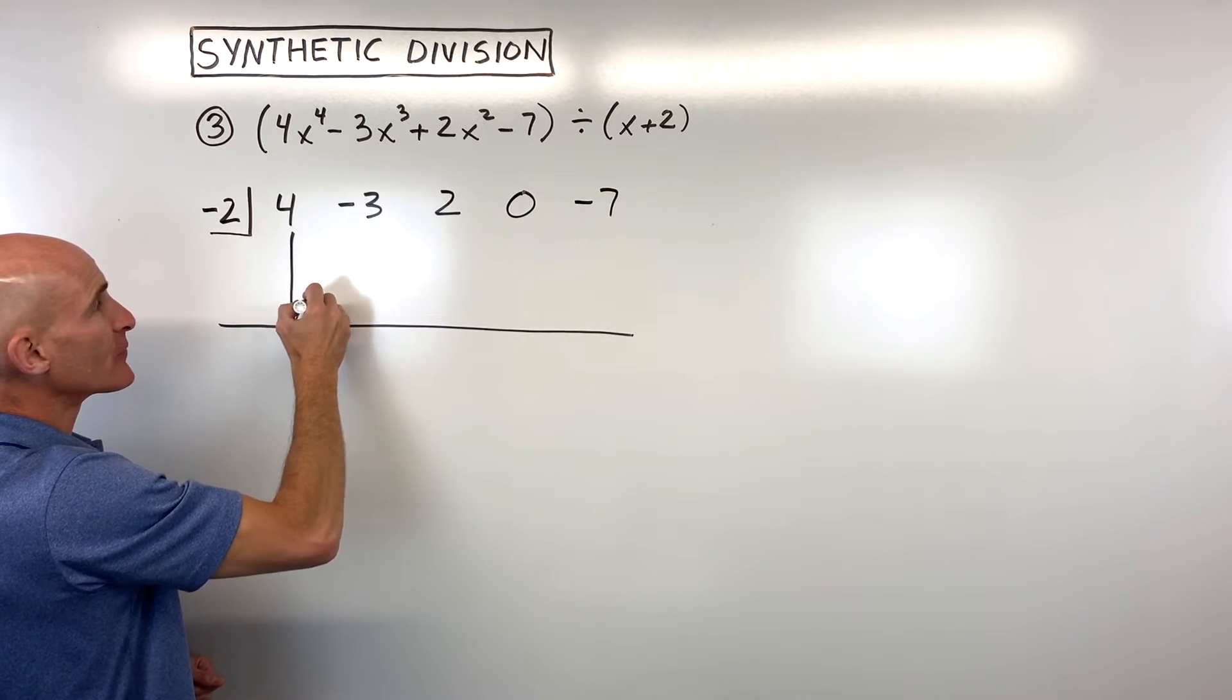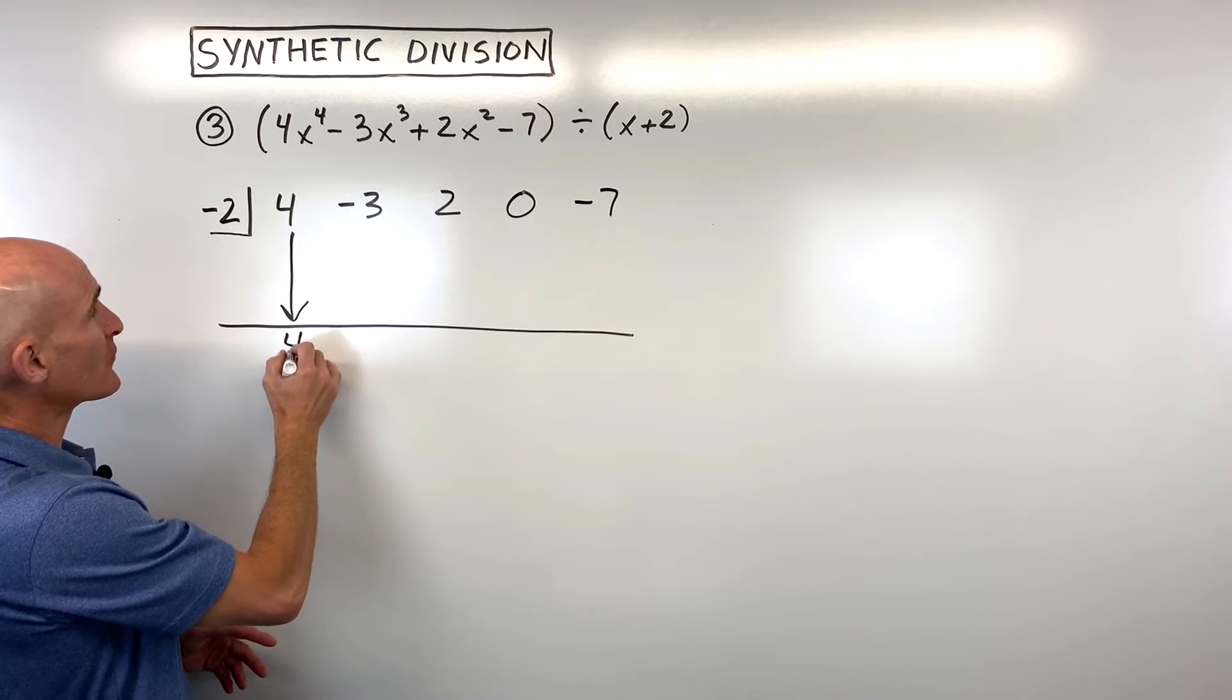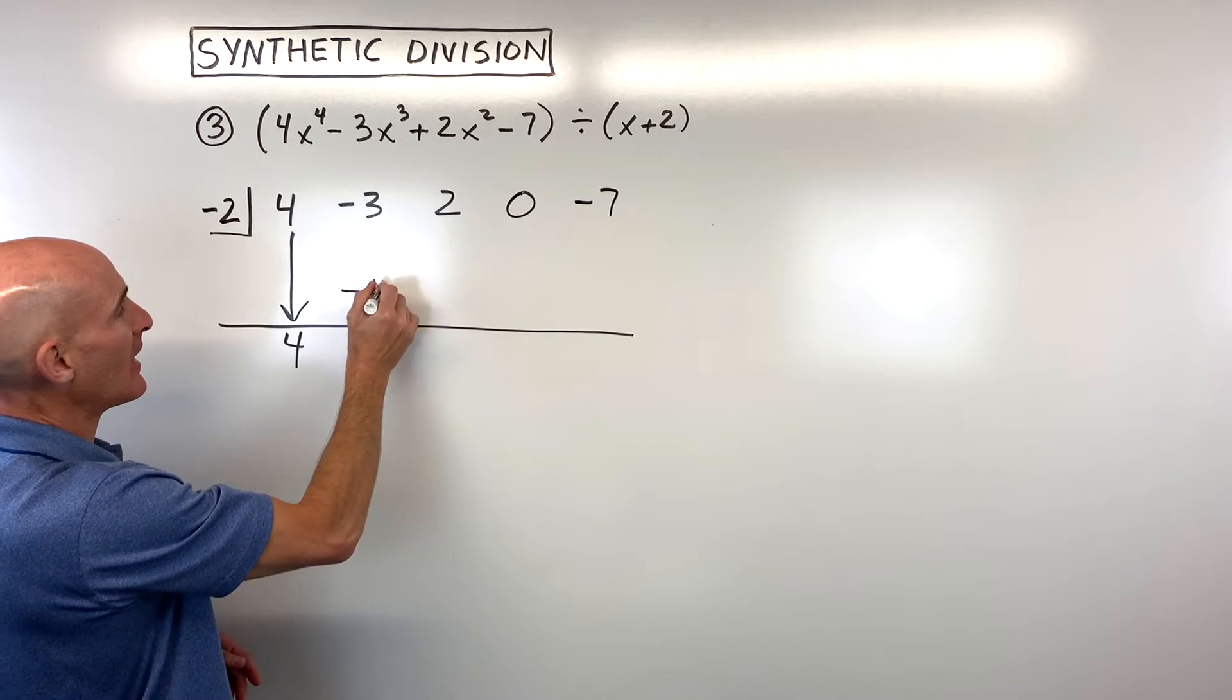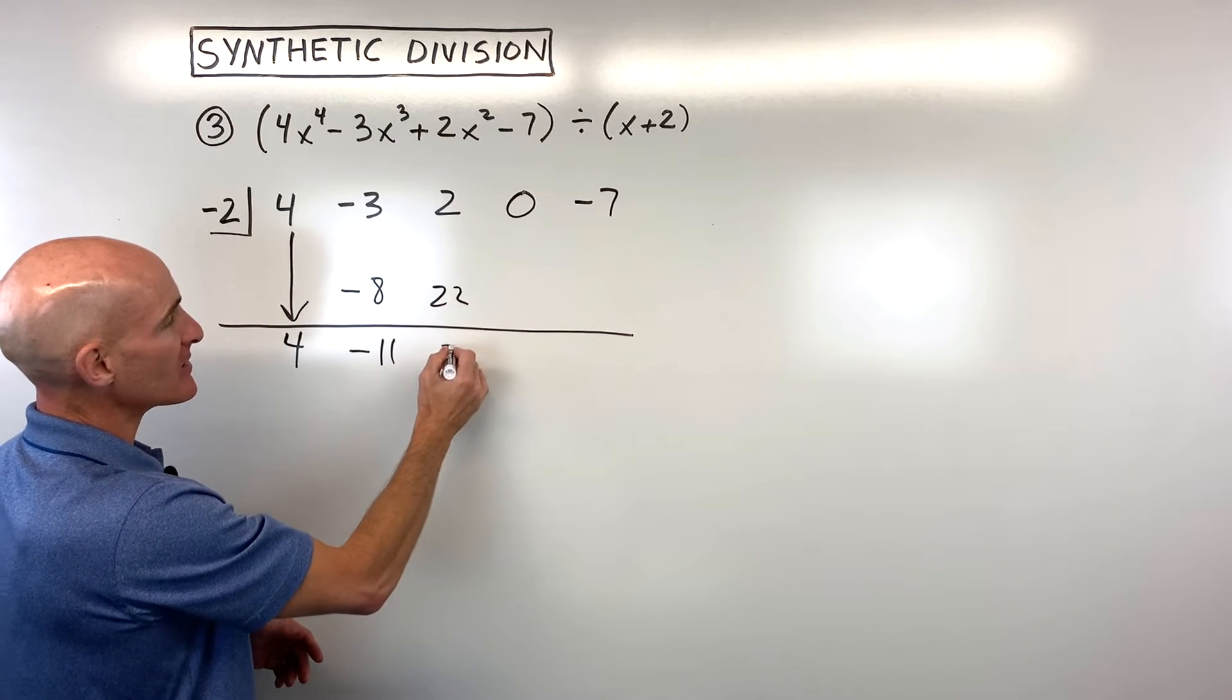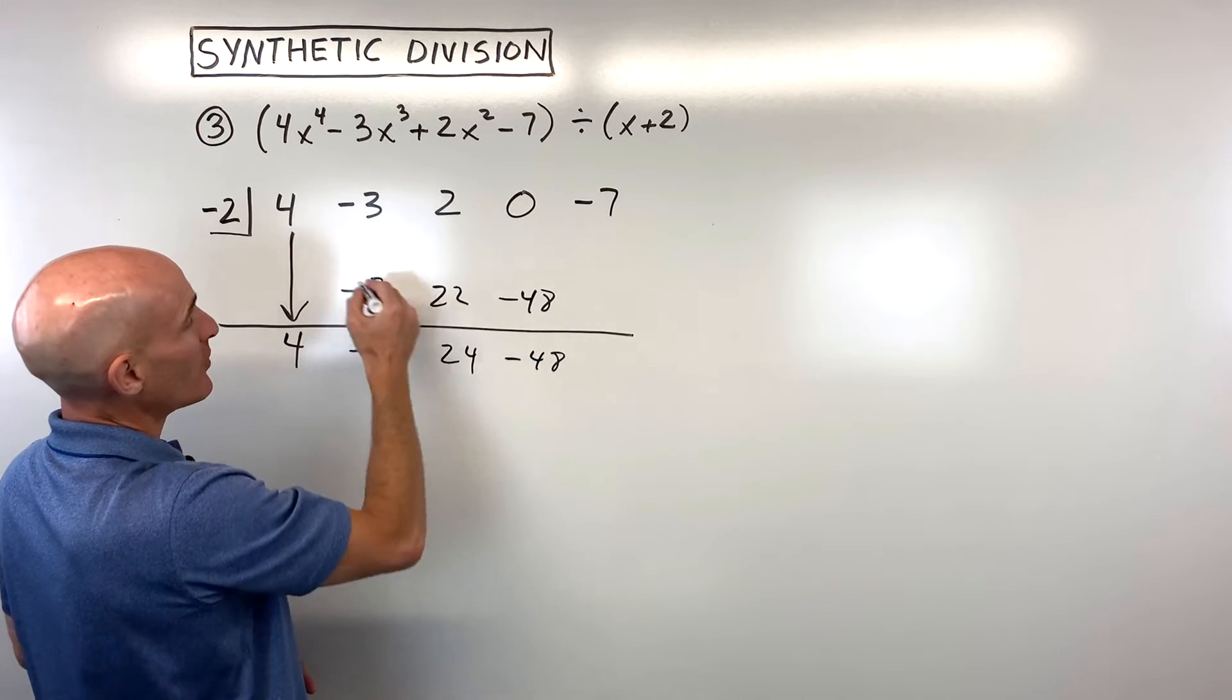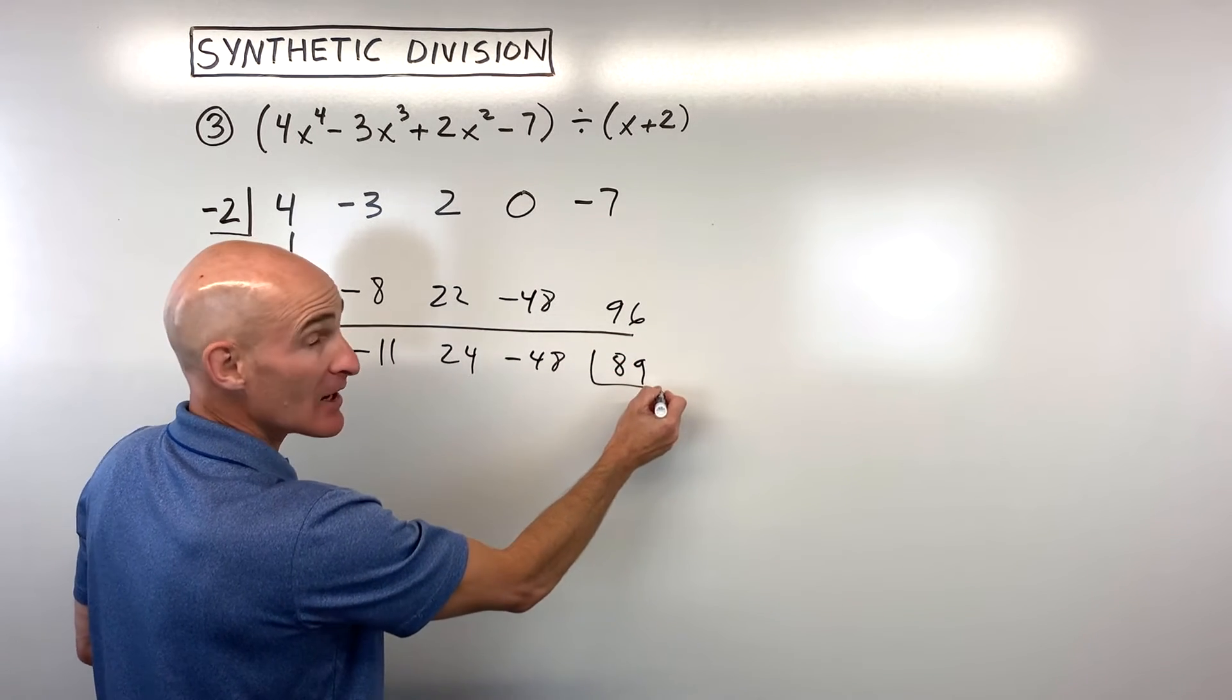Remember, you always want to drop down that first number. That's kind of a little bit different step here. So you drop down that first number. Then once you do that, you just multiply and add, multiply and add, multiply and add. And I like to say multiply on the diagonal, add straight down, multiply on the diagonal, add straight down, multiply on the diagonal, add straight down, multiply on the diagonal, and add straight down, which is going to give us 89 as a remainder.